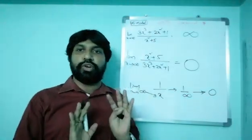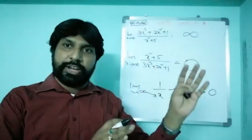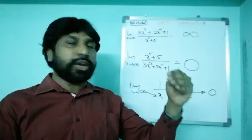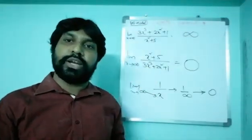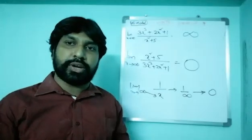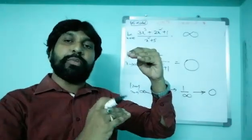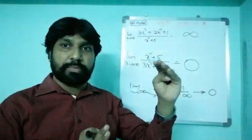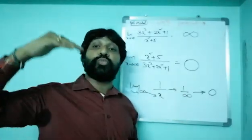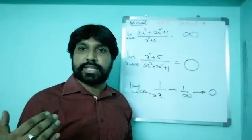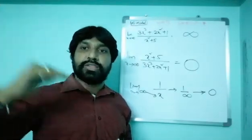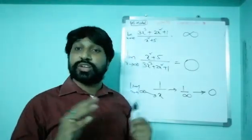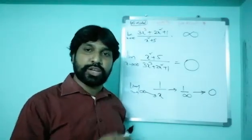Let me summarize all three shortcuts. Shortcut number one from yesterday: when numerator power and denominator power are both equal, the coefficients of those highest powers give your answer — I put that link in the description as shortcut number six. The remaining two shortcuts: whenever x is remaining in the numerator after cancellation, the answer is infinity. Whenever x is remaining in the denominator after cancellation, the answer is zero.